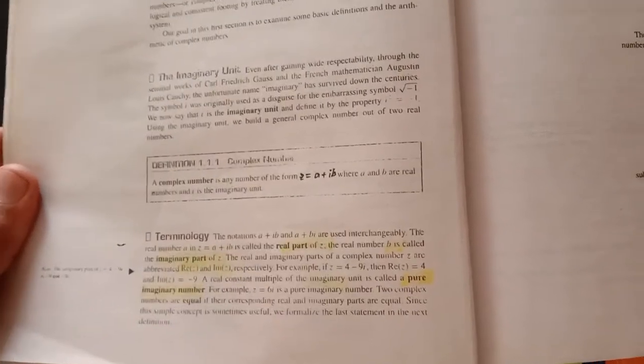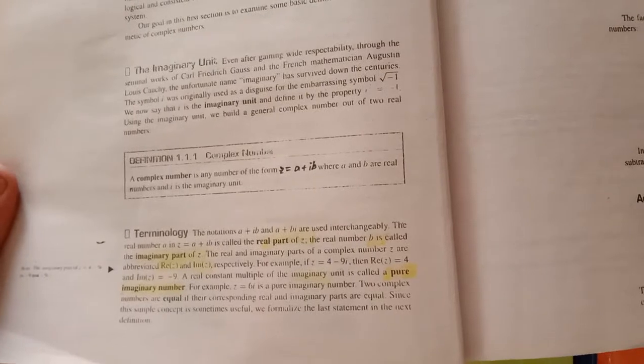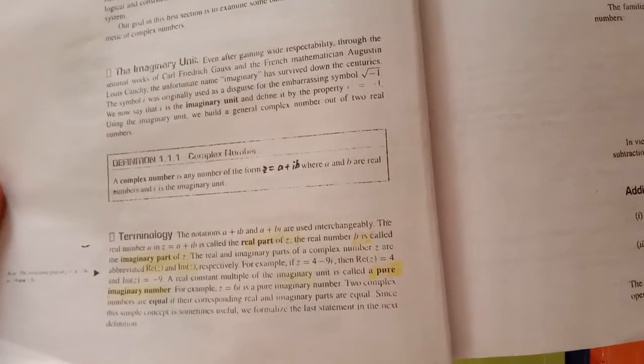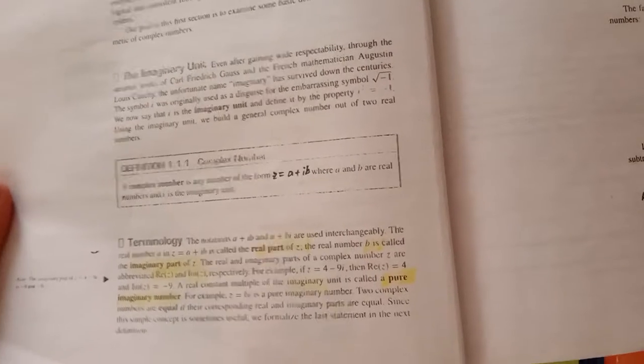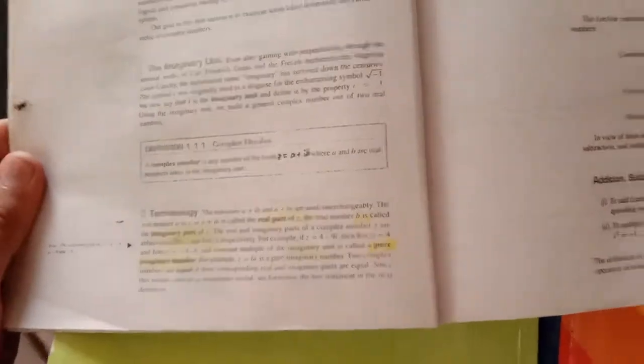Definition of the complex number. A complex number is any number of the form Z is equal to A plus iota B, where A and B are any two real numbers and iota is the imaginary unit.